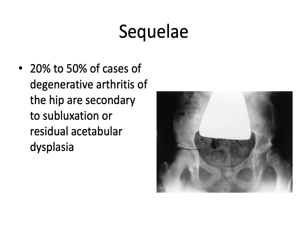Even without dislocation, dysplastic hips suffer long-term problems, including early degeneration, due to the smaller surface area of the articular surfaces carrying the same weight, resulting in higher pressure. In this x-ray, the right acetabulum has a large surface area and can distribute weight over a greater surface of the femoral head, unlike the left acetabulum where forces are concentrated over a smaller part of the femoral head articular cartilage, leading to premature degeneration and early onset osteoarthritis.